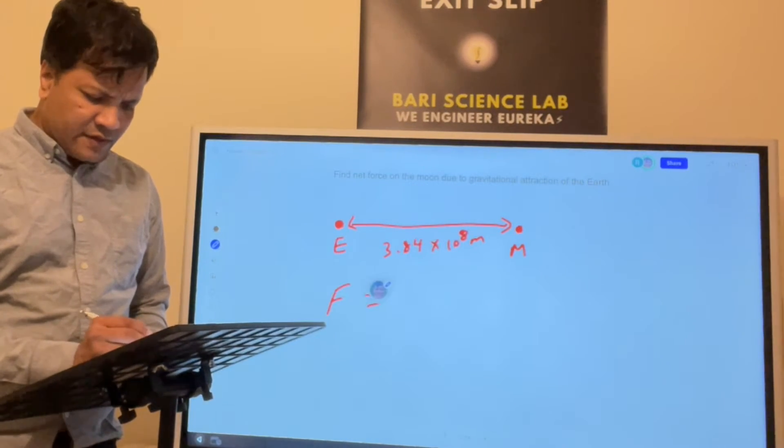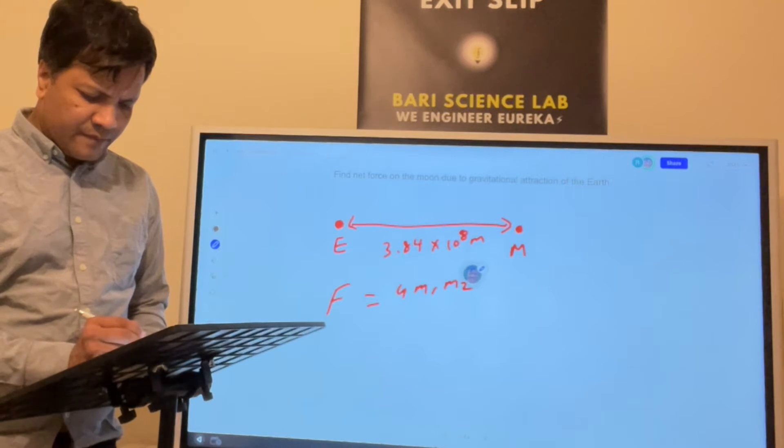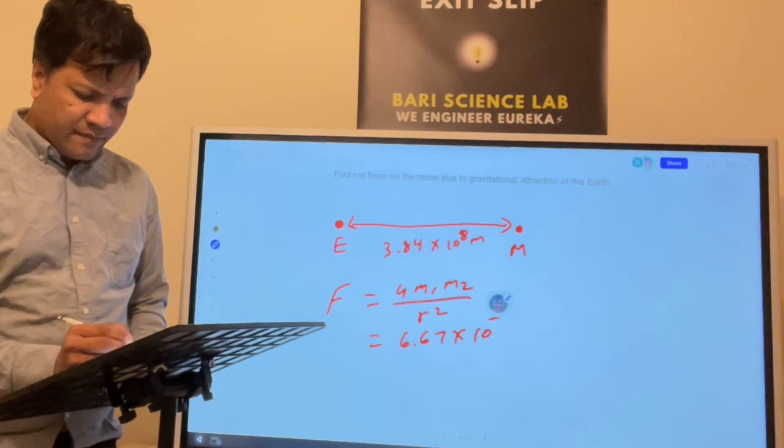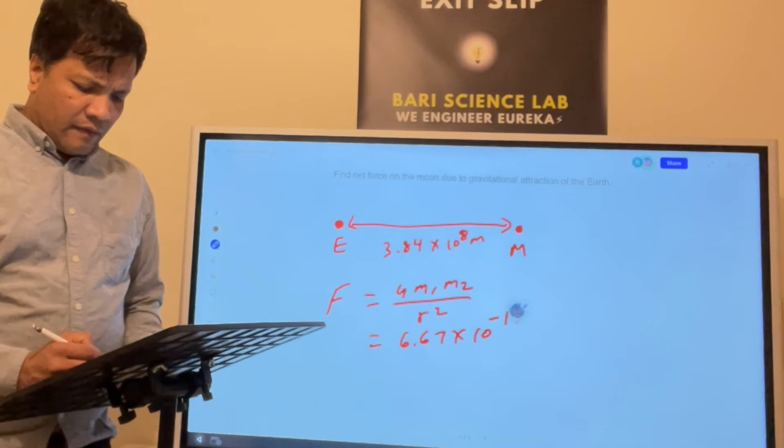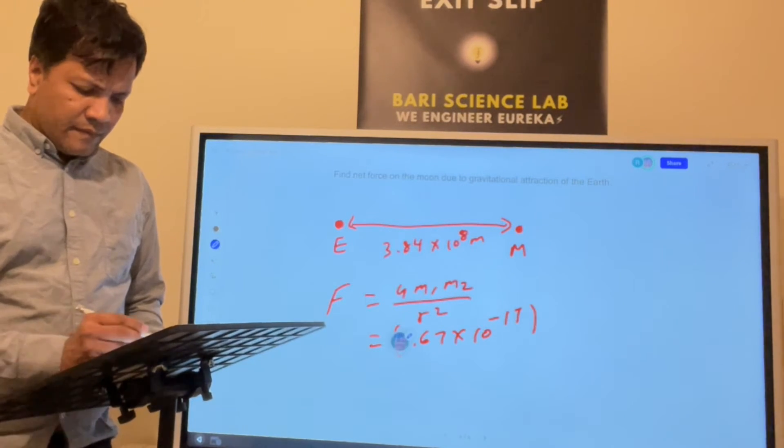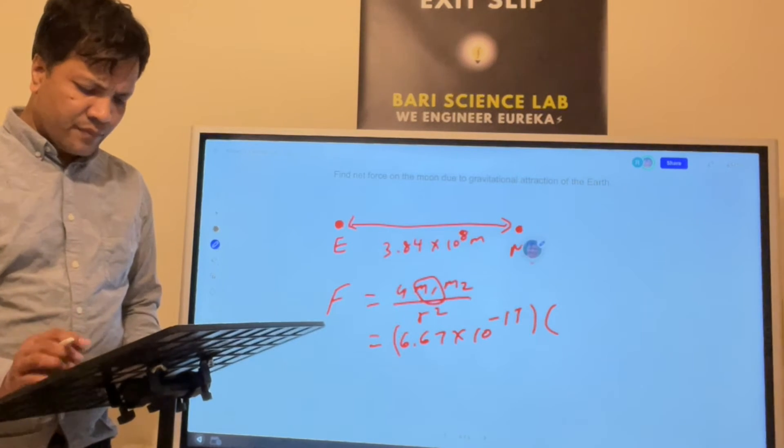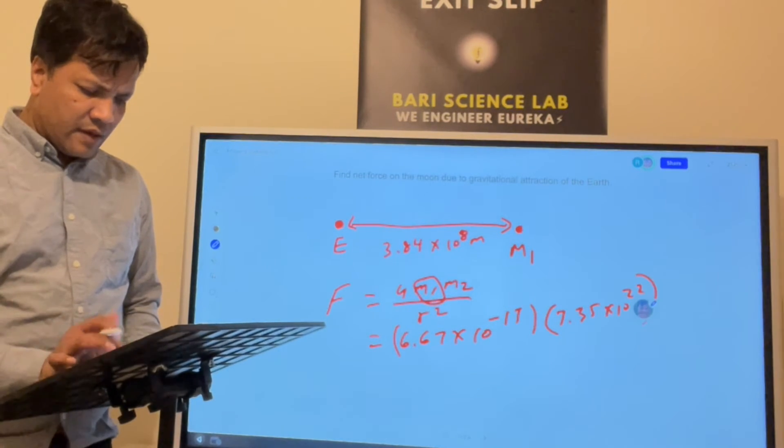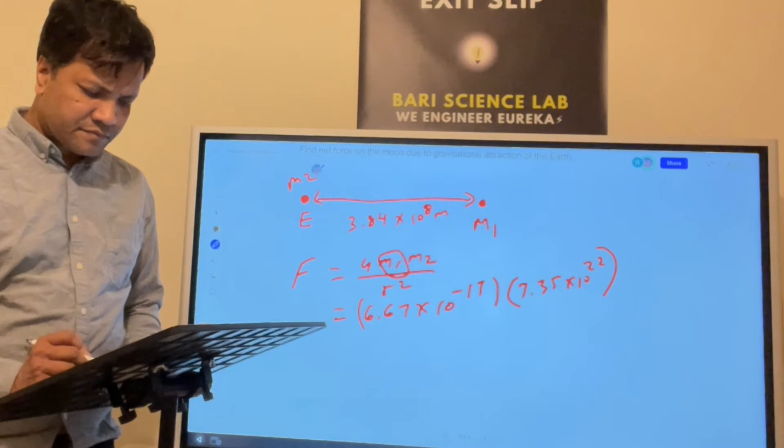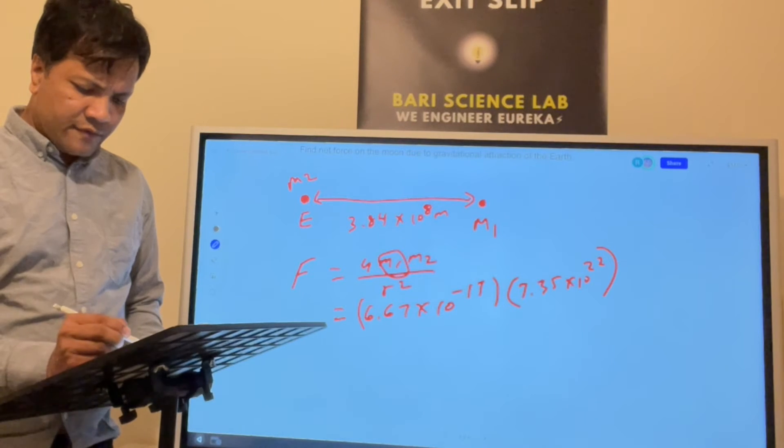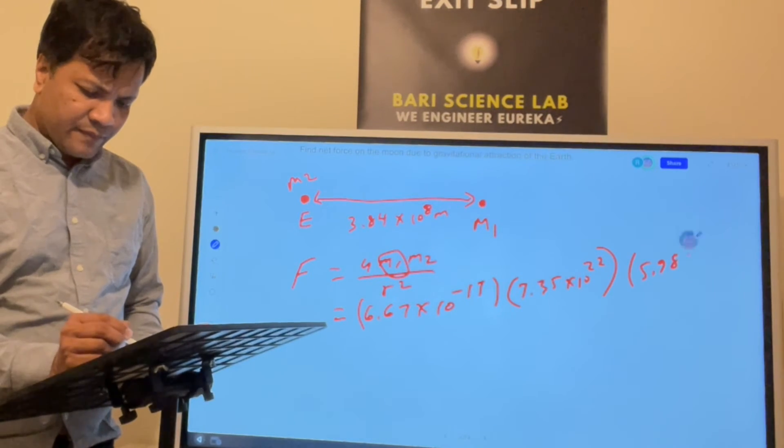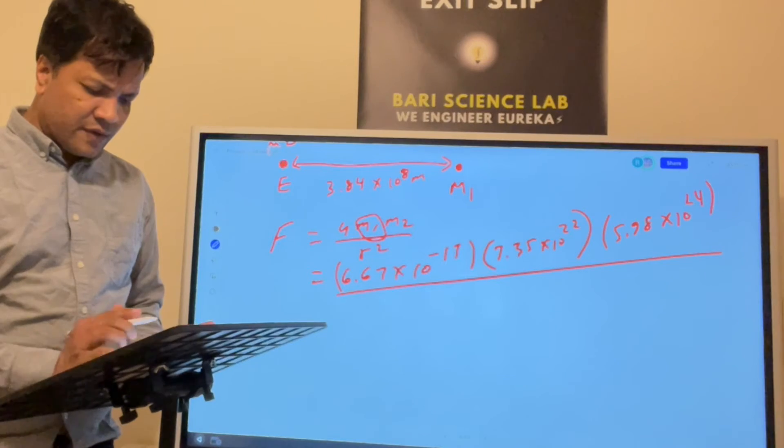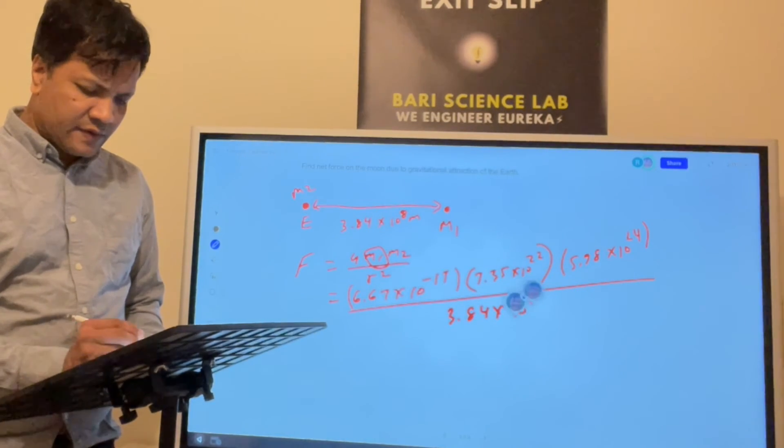So F is equal to G M1 M2 over R squared. Now, as you know, G is 6.67 times 10 raised to negative 11. M1 is moon, 7.35 times 10 raised to 22. M2 is earth, 5.98 times 10 raised to 24. And the radius between the earth and moon is 3.84 times 10 raised to 8 squared.